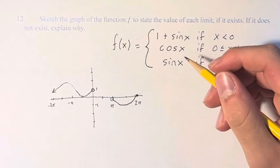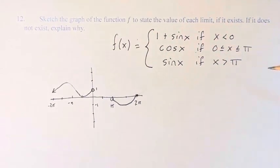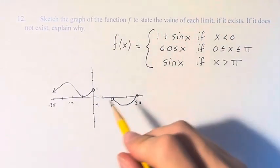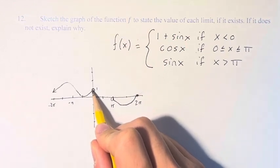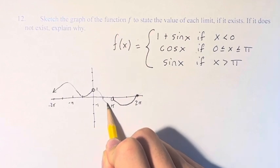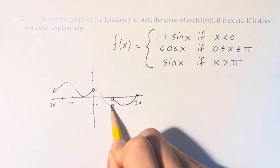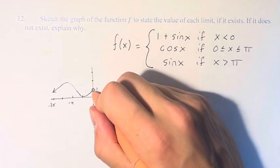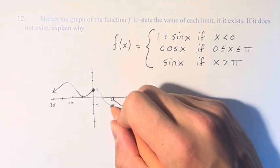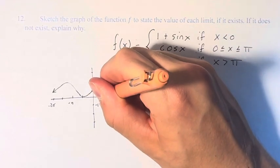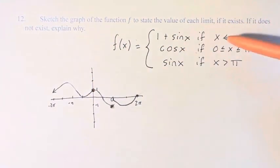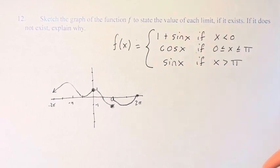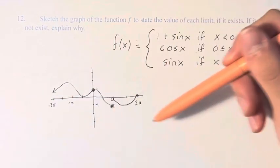And now we can draw in cosine of x only on the domain in which we need it. So we start here at x is equal to 0. And we see that it goes like this and like this. So we have two open circles that we can fill in because the function is equal to cosine of x at those values. So this is the graph of the function.